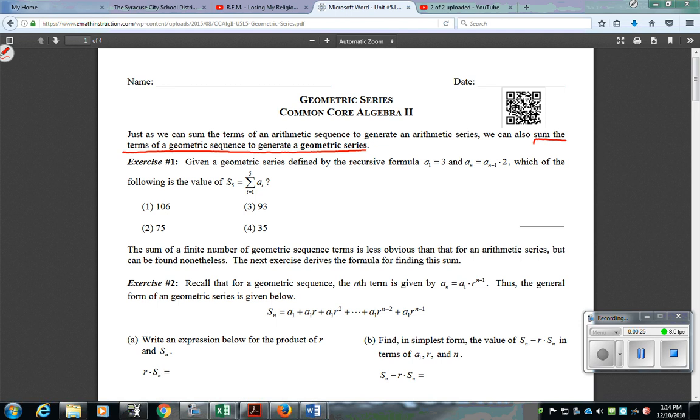So for our question here, they give us a recursive formula with the first term and then the next following terms. They want us to figure out the series from 1 to 5. So they tell us what 1 is. It's 3. And then, to get each next number, we need to multiply by 2.